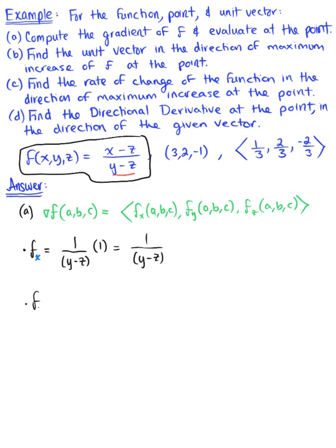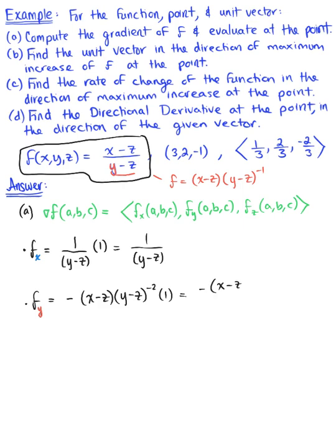Now the partial derivative of this function with respect to y: since we're differentiating with respect to y, we treat x and z like constants. Notice that y is in the denominator, so we rewrite this function as f equals x minus z, multiplied by (y minus z) raised to the negative 1. Differentiating by the chain rule, we get minus 1 multiplied by (x minus z), multiplied by (y minus z) raised to the negative 2, multiplied by the derivative of y. Simplifying, we're left with minus (x minus z) all divided by (y minus z) squared.